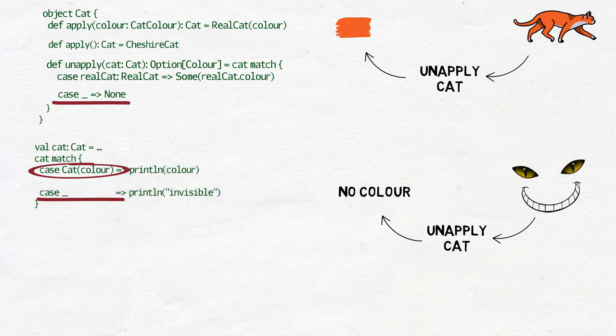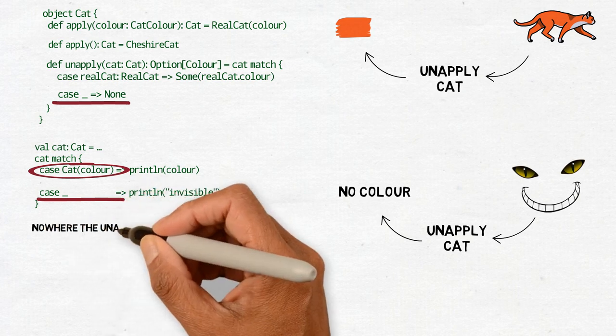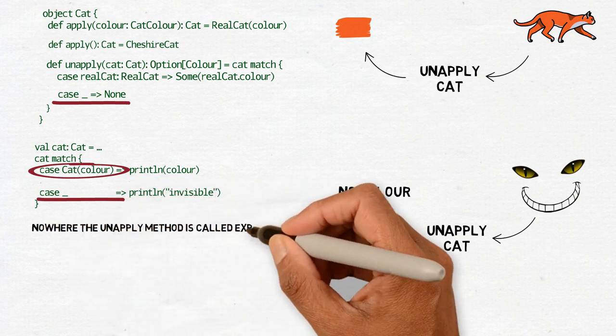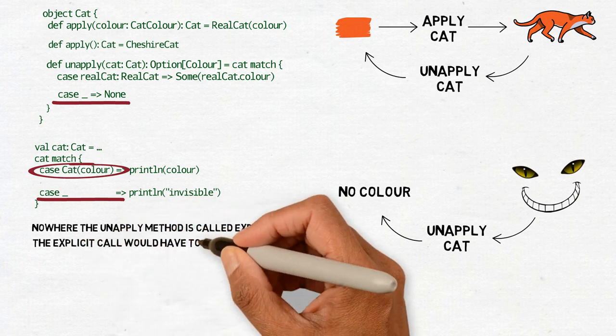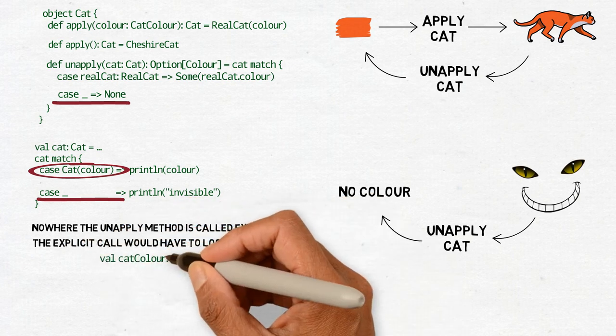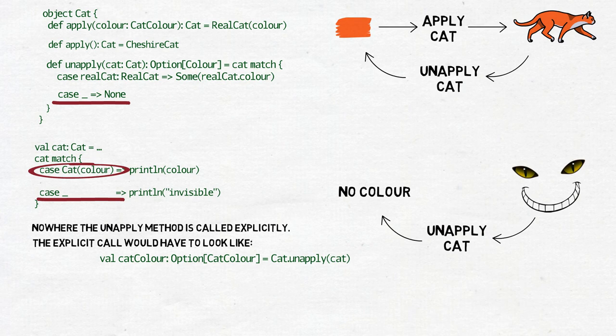There's also one more interesting thing you may have noticed. Nowhere in those examples the unapply method is called explicitly. But it's a bit more tricky than with the apply method, where we simply used x and the list of arguments instead of x.apply and the list of arguments. In the case of unapply, the explicit call would have to look something like this. And if we are absolutely sure that the cat has a color, then we may reduce it to this.